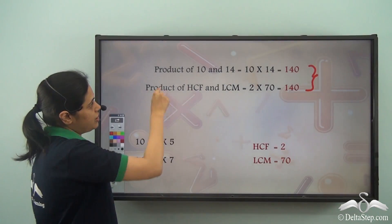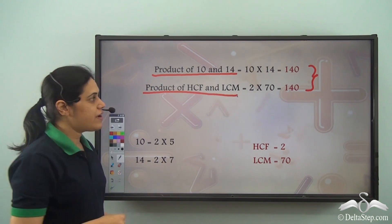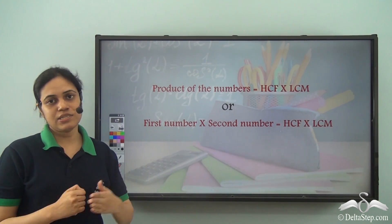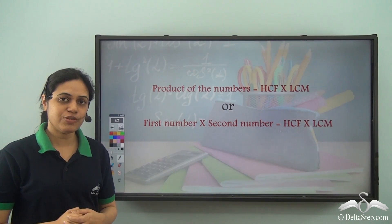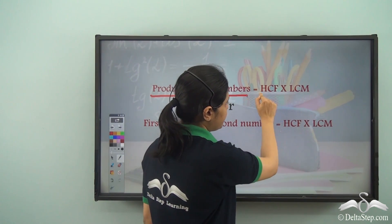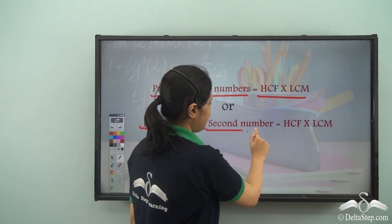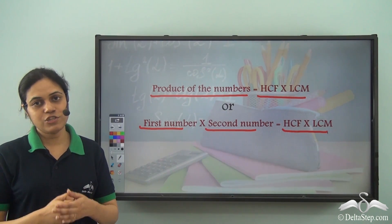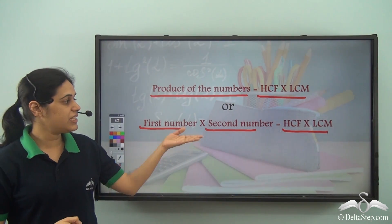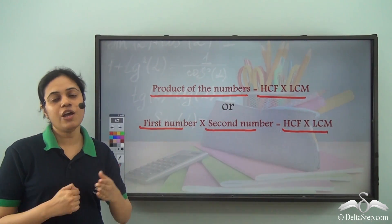What is the relation? The relation is: the product of the numbers is equal to the product of HCF and LCM of the two numbers. This is a very important property. It says product of numbers = HCF × LCM, or: first number × second number = HCF × LCM. You can take any two numbers and try it out — you will see that this relation always holds true.